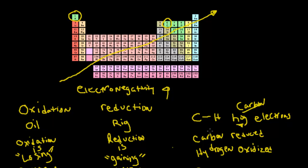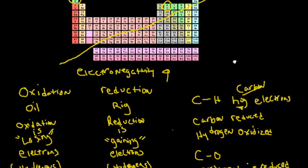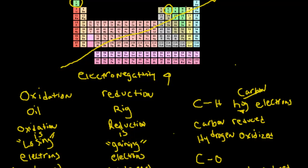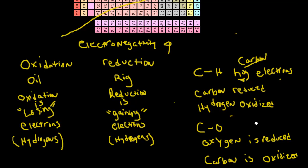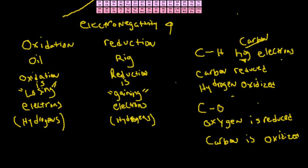Carbon is being reduced because reduction is gaining, and hydrogen is being oxidized because oxidation is losing — so hydrogen is losing those electrons. Now let's look at our second example: carbon and oxygen. Oxygen is right here on the periodic table and is a lot more electronegative than carbon. So if those two are bonded together, oxygen is going to be reduced — it's going to be gaining carbon's electrons — and carbon is going to be oxidized. That's probably one of the simplest examples of oxidation and reduction.